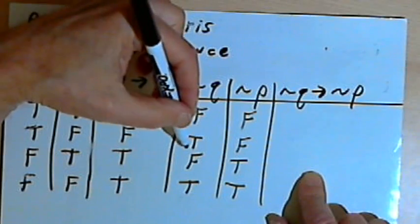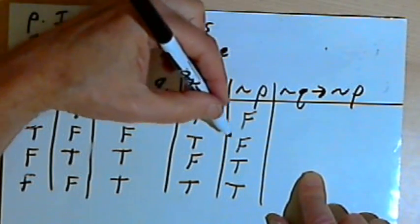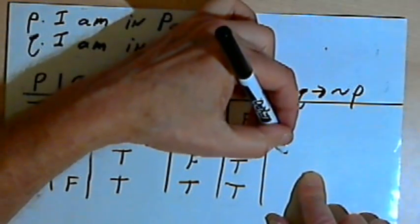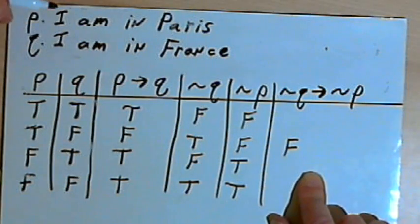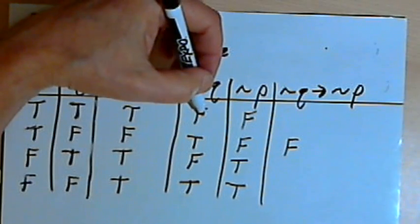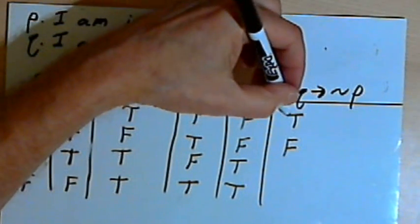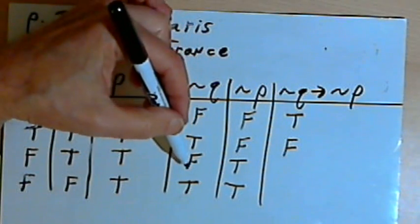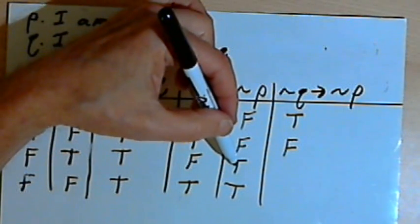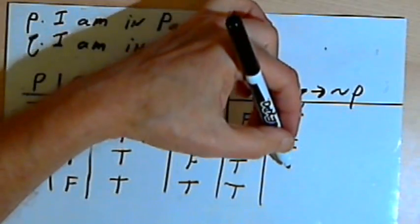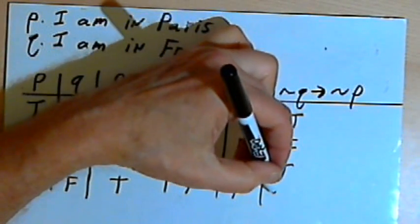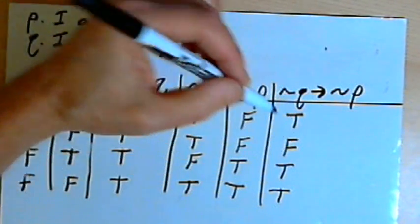So when not Q is true and not P is false, this contrapositive is going to be false. When both not Q and not P are false, the contrapositive is true. When not Q is false and not P is true, the contrapositive is true. And when they're both true, the contrapositive is true.